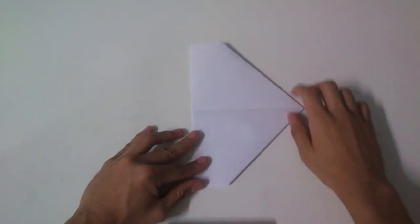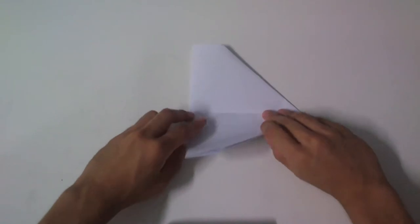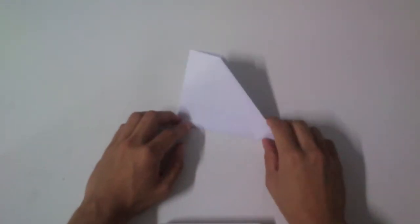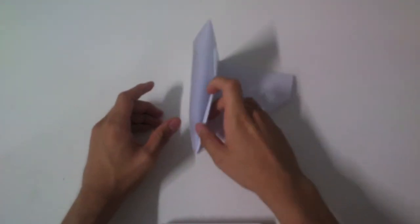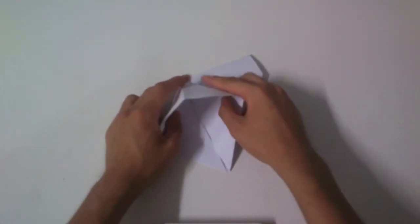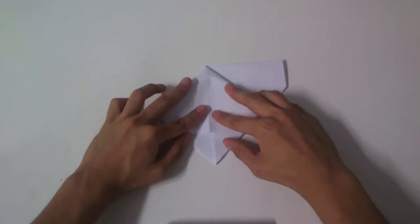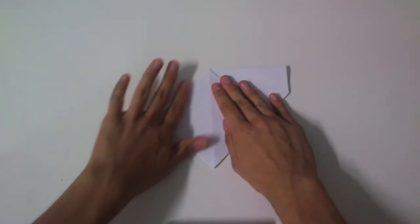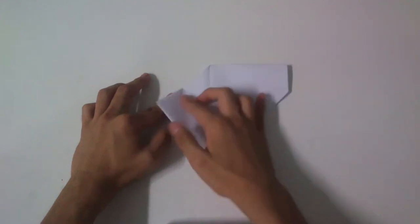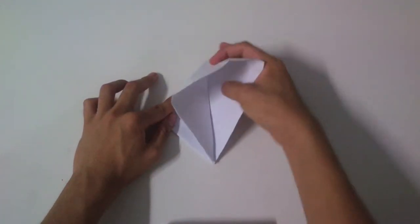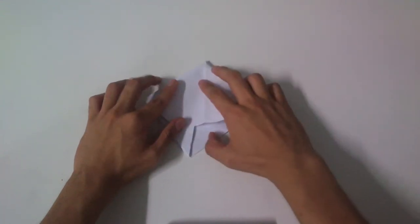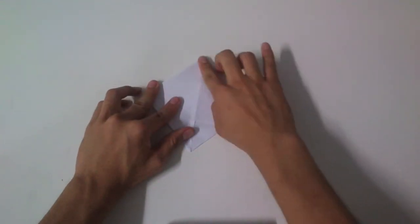First flip the left part to the right and then flip up the lower part. Then open one pocket on the left and press it down to make flaps. Now the same goes to the right. Open it, press it down, and then make another flap.